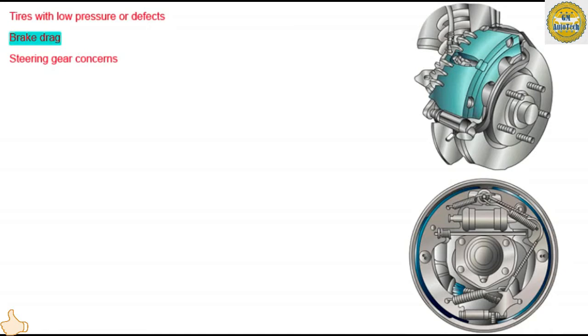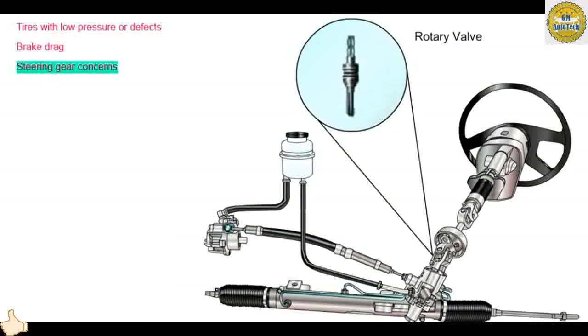Brakes are not usually associated with steering concerns. However, a dragging brake on any wheel can cause a drift condition. If a brake caliper or wheel cylinder is frozen, a pull could result. All brake calipers should be inspected for proper operation. Be sure to inspect the brake rotors for any signs of excessive heat or caliper drag.